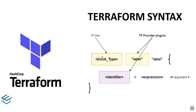So the Terraform syntax has block types including terraform core, resources, terraform variables. At the label level, the provider label — for example, AWS uses labels like aws_ec2_instance and aws_s3_bucket. For provider-based labels, they differ depending on the provider chosen — AWS, Azure, or Alibaba cloud. You can check the documentation for the different providers and their respective labels.